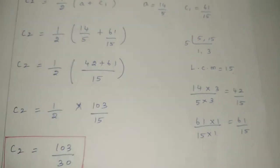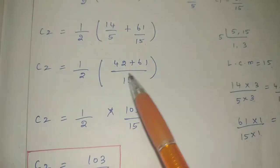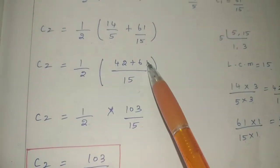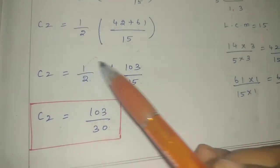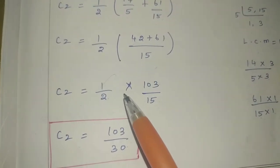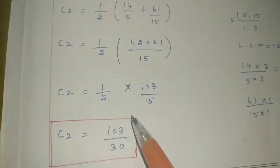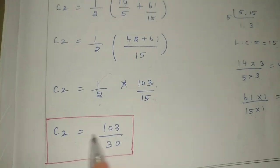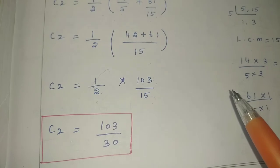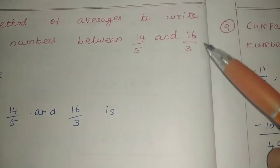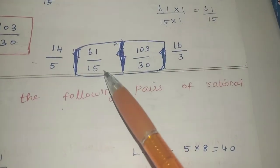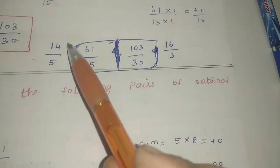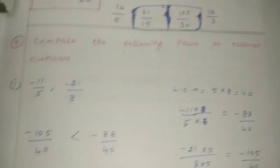Adding: 42 plus 61 is 103. So 103 by 15. Then half into 103 by 15 — cross-cancel 2 into nothing. So C2 is 103 by 30. The two rational numbers between 14 by 5 and 16 by 3 are 61 by 15 and 103 by 30.